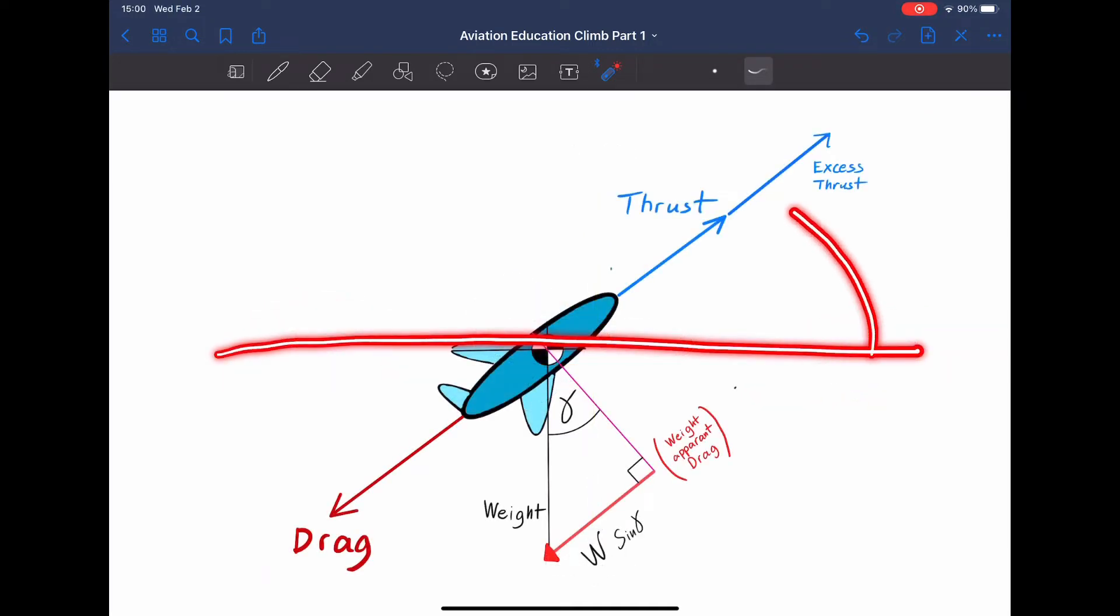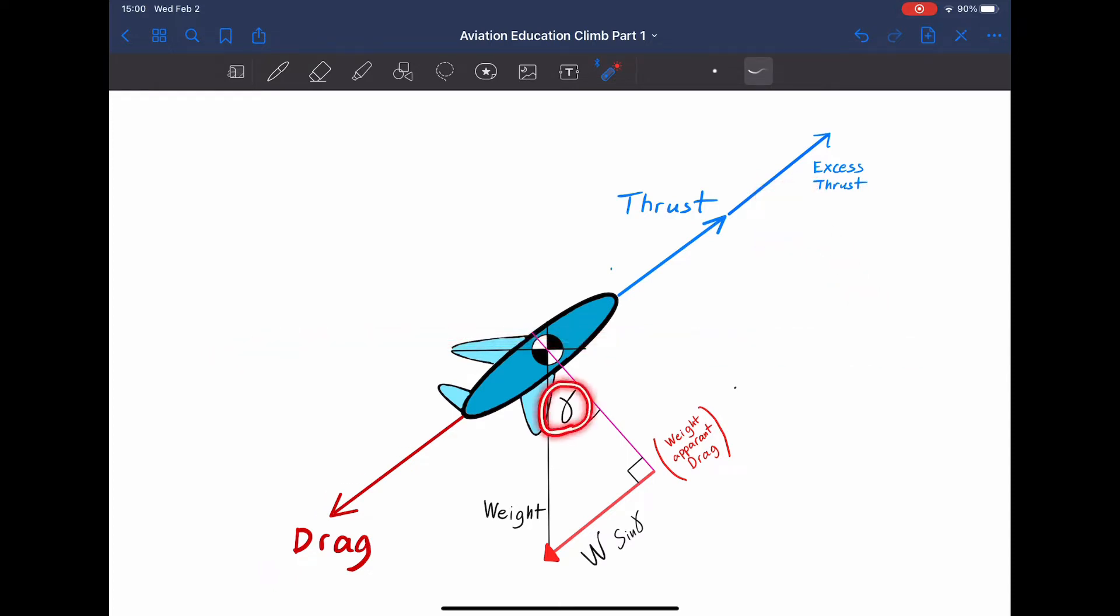You notice by rotating the airplane 45 degrees counterclockwise, we get a climb angle that I just circled. And with that climb angle, we get a weight apparent drag. The weight apparent drag can be found by using some basic trigonometry. It is the weight multiplied by the sine of the climb angle.